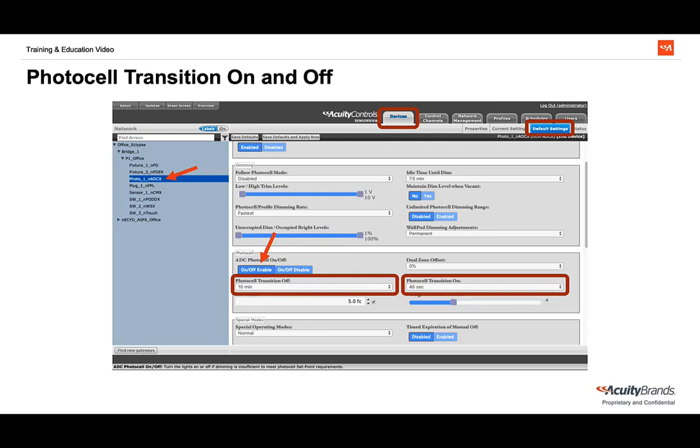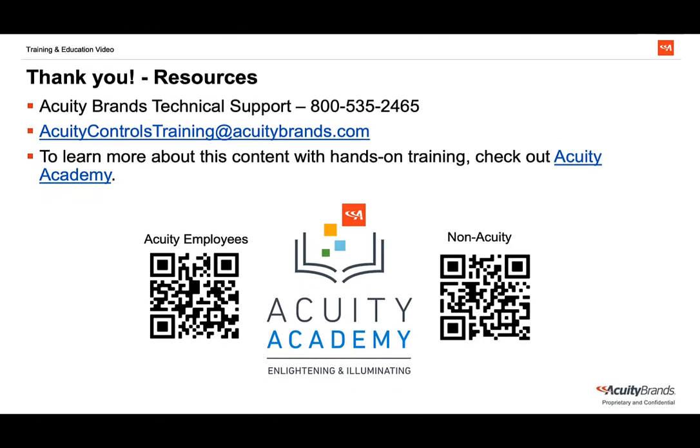Now we know multiple InLight settings we can adjust during creation of a Daylight Harvesting Zone. These are designed to meet codes across the country and end user desired sequences of operation. Thank you for watching our tutorial! You have just learned the advanced settings to program a Daylight Harvesting Zone. Be sure to check out our other Daylight Harvesting modules for wall pod tracking adjustments and InLight air specific content. For more information, please reach out to Acuity Brands Technical Support at the phone number listed or use the links provided. Keep an eye out for new content and feel free to send an email to acuitycontrolstraining@acuitybrands.com if there are any other topics you would like to see.